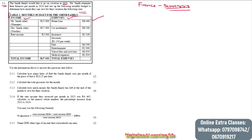We have income and expenses. As I always say, in Mathematical Literacy we will always be given something to work with. In this case, we are given the monthly budget for the Smith family that we need to use so that we can answer our set of questions.